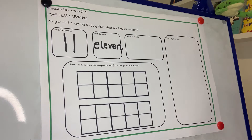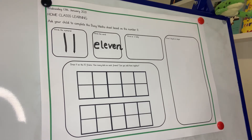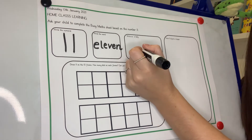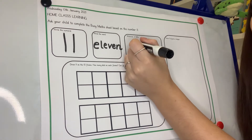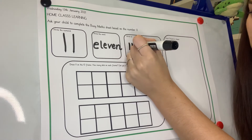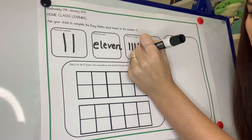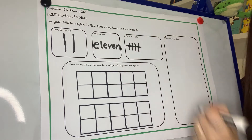Our next box says that we have to write a tally. Remember, when we're using a tally we're grouping in fives. Let's have a go at doing a tally for the number 11. I'm going to count 1, 2, 3, 4, and 5 goes in the middle.